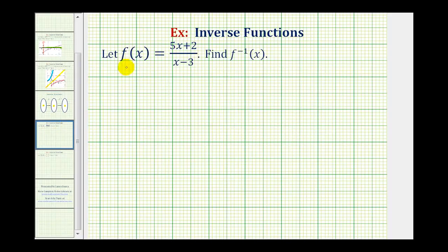Which means when we're given the equation of the function, we want to find the inverse. The first step is to write the original function in terms of x and y, and then we'll interchange the x and y variables. So the original function can be written as y equals the quantity five x plus two divided by the quantity x minus three.